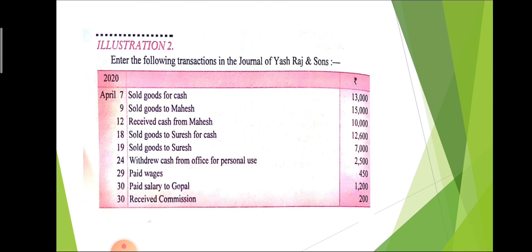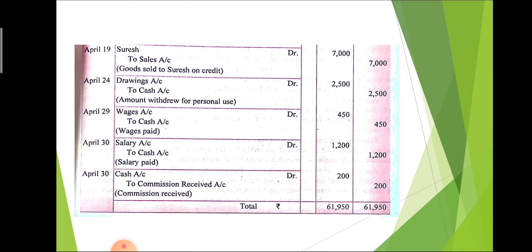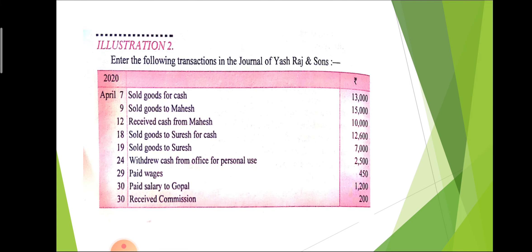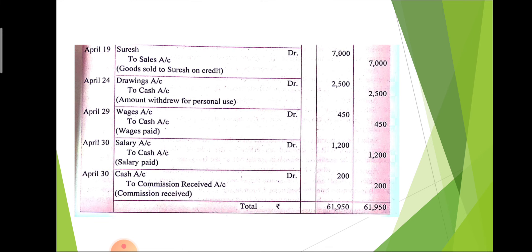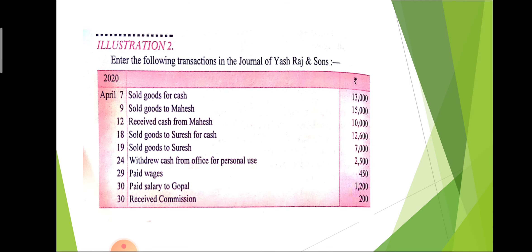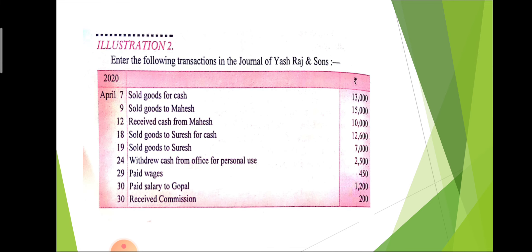On April 19th: sold goods to Sures — name is given, so the journal entry is: Sures debit to sales account, by rupees 7,000. Next: withdrawn cash from office for personal use means drawing, which is one type of expense, so the journal entry is: drawing account debit to cash account. Paid wages: wages is an expense, so the journal entry is: wages account debit to cash account. Paid salary to Gopal: salary is also one type of expense, so the journal entry is: salary account debit to cash account.